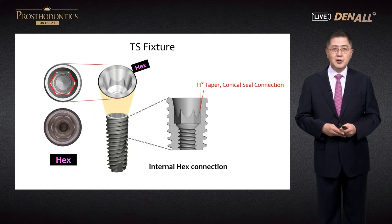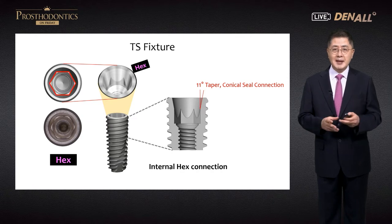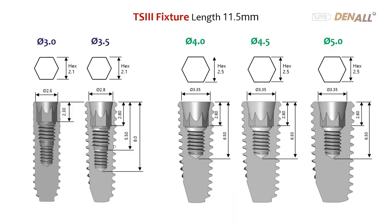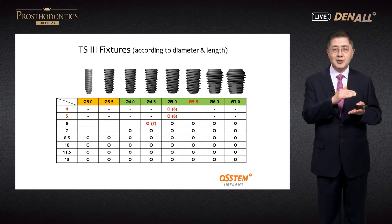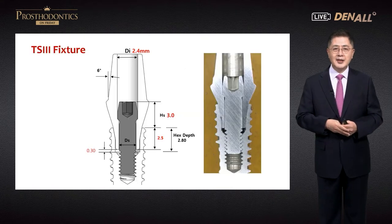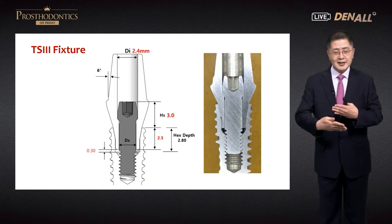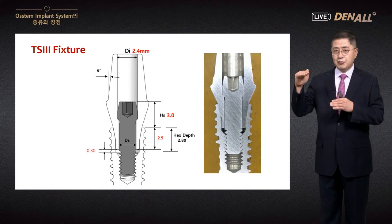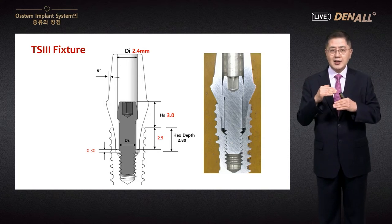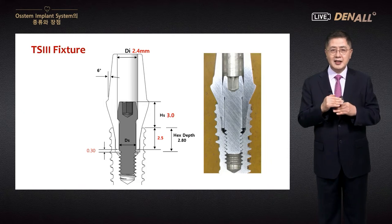The most widely used connection is the TS with 11-degree taper and 2.5 mm diameter hex at the bottom — currently about 80% of connections use this type. Recently, hex structure is not included in the product. Ostem's TS implants have 3.0 to 7.0 mm diameters in two types: 3.0 and 3.5 are mini connections; 4.0 and above are regular connections, and these two cannot be mixed. The TS implant figure from top of fixture to abutment screw head has a height of 3.0 mm — a very important piece of information.